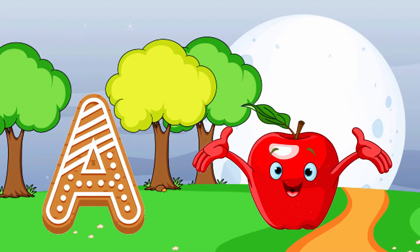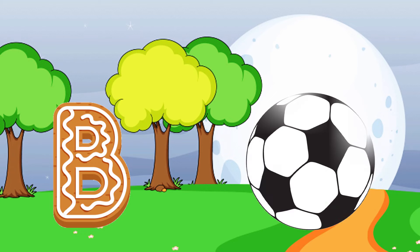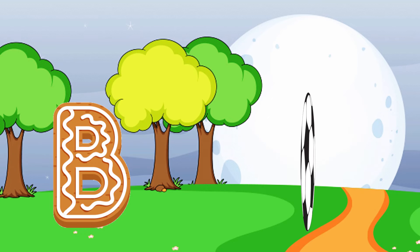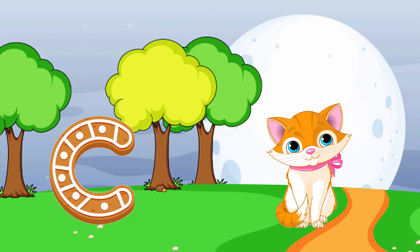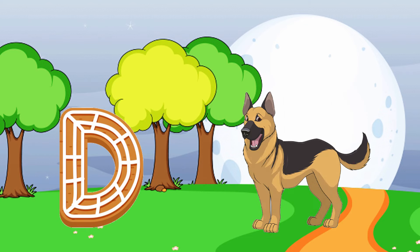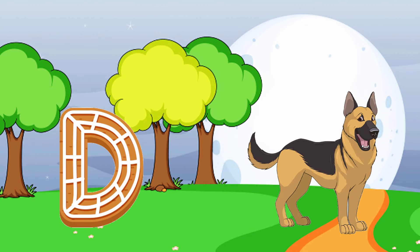A is for apple, a-a-apple. B is for ball, b-b-ball. C is for cat, c-c-cat. D is for doll, d-d-doll.